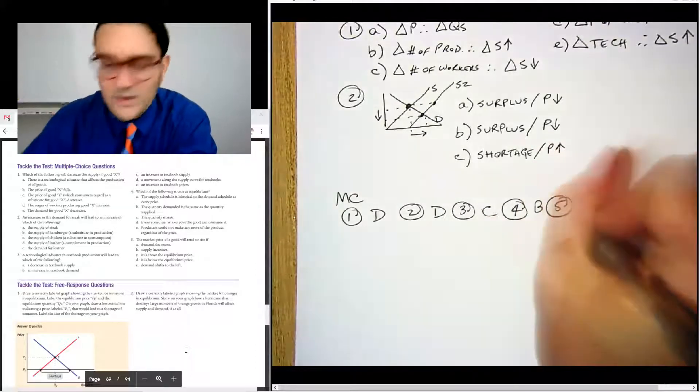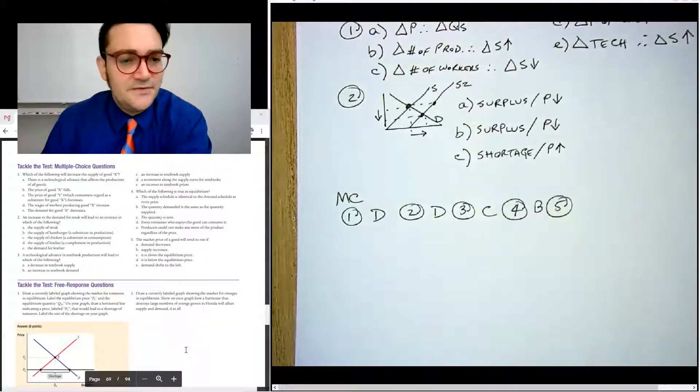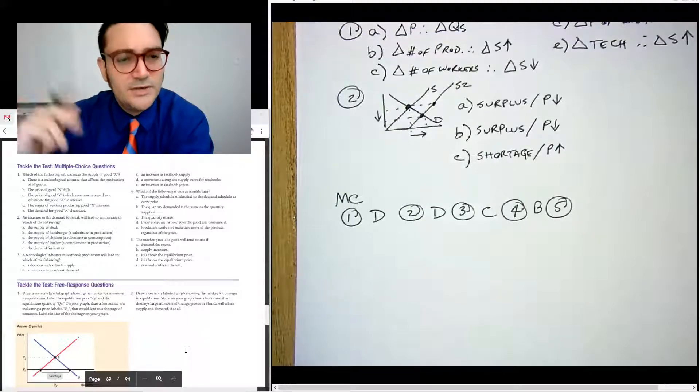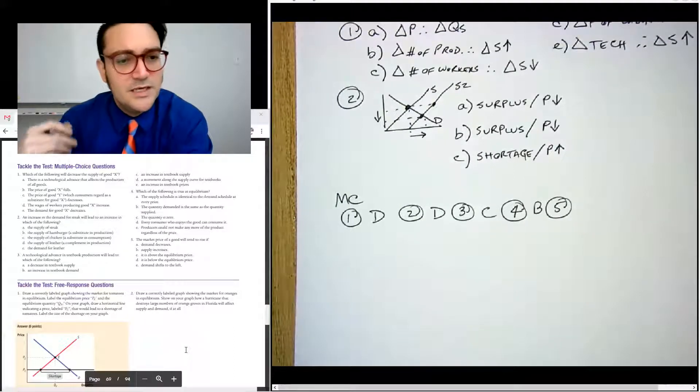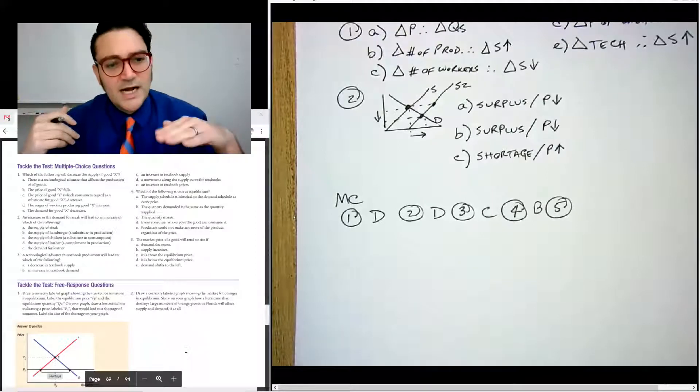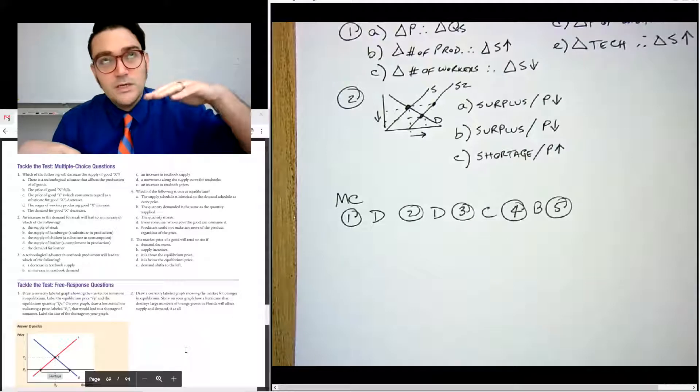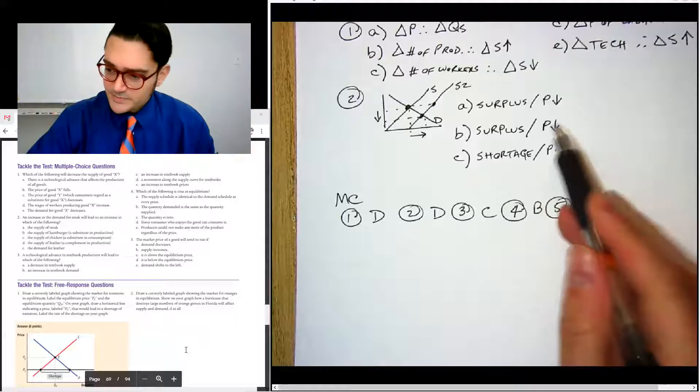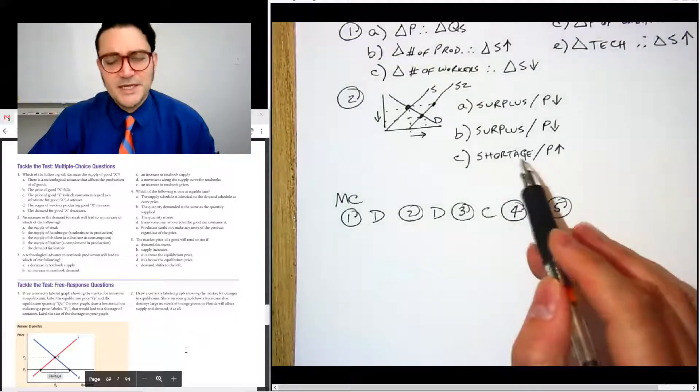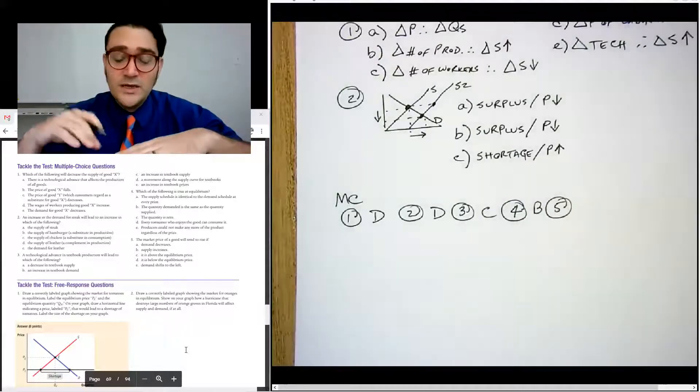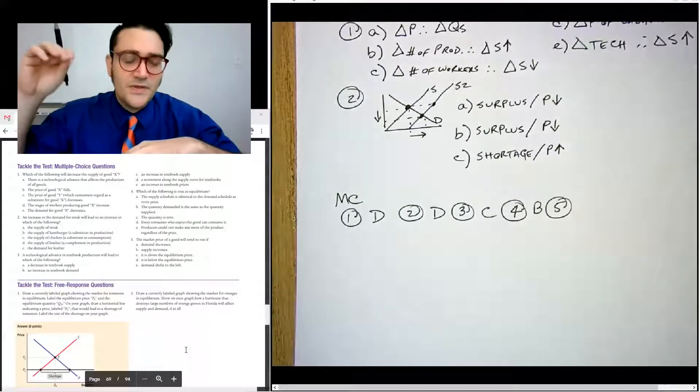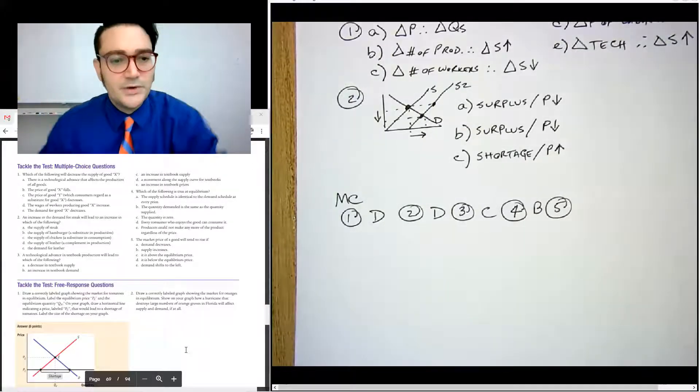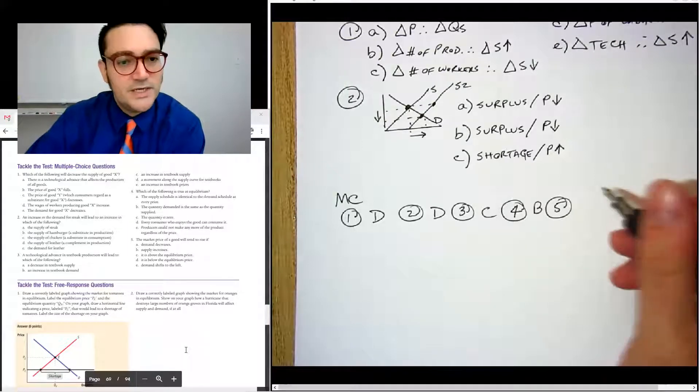Number five, market price of a good will tend to rise if, demand goes down. No, that would make the price go down. The supply increases that would make the price go down. If the price of the market price will tend to rise, if it is above the equilibrium, no, it would be below. If it's below the equilibrium, it'll go up to clear a shortage. So this is the idea of saying if you have a price that's really low, but the market price is higher than that, then the price will kind of naturally rise up to that equilibrium clearing price. So the correct answer for this one is D.